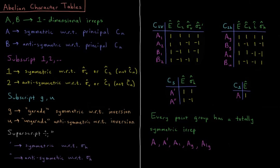And the superscript prime or double prime, as we see in Cs, indicates symmetry with respect to sigma H. So prime is symmetric with respect to sigma H plus one, double prime is anti-symmetric with respect to sigma H minus one. And then if it's only got the single irrep by itself, it can just be A.